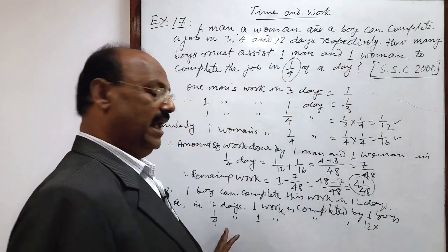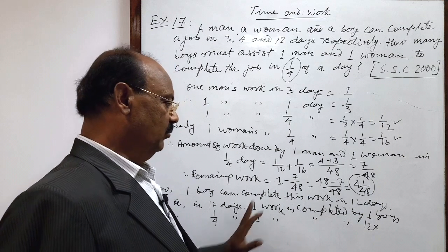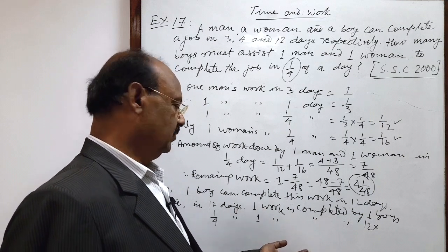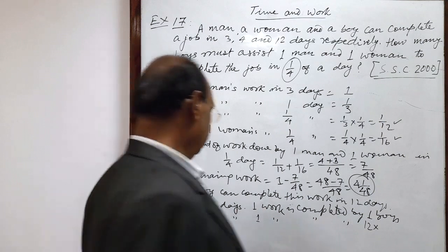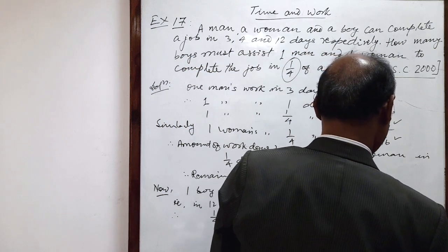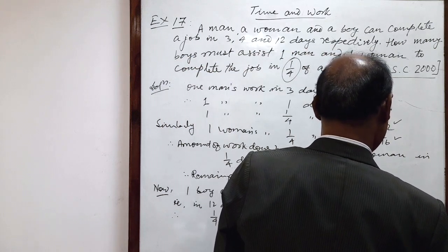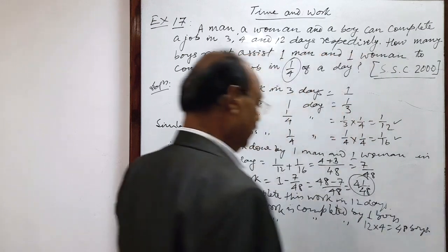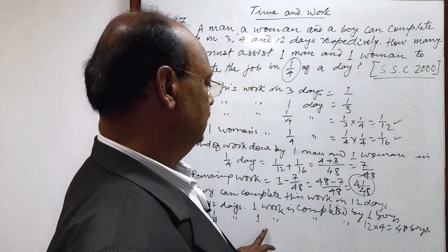If time is less, number of boys will be more, correct. So this will be, 4 is equal to 1 by 4, 4 is equal to 48 boys, for completing this work.